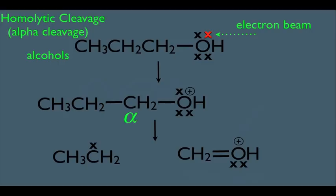This means that our quick product method would also work for alcohols when it comes to alpha cleavage. You're going to locate the alpha carbon, make the cut right here, and on the right side of this cut, the alpha carbon is going to be doubly bonded to the oxygen, and you're going to know that is the fragment that is detected.